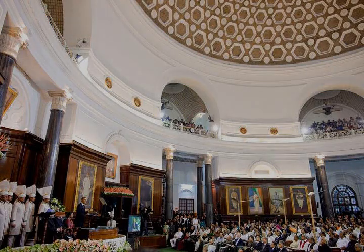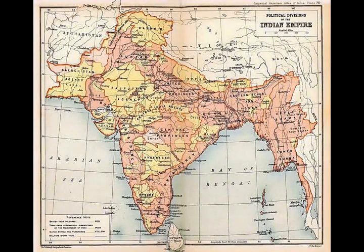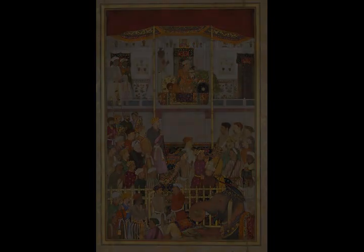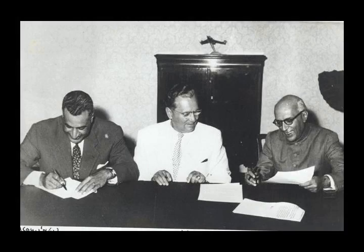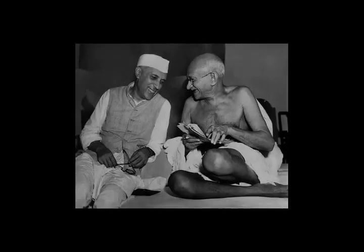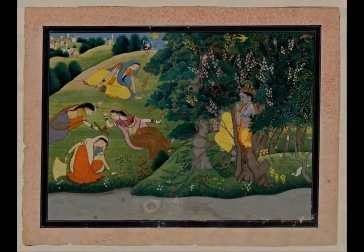India has been a member of the WTO since 1 January 1995. The 522 million worker Indian labor force is the world's second-largest as of 2017. The service sector makes up 55.6 percent of GDP, the industrial sector 26.3 percent, and the agricultural sector 18.1 percent. India's foreign exchange remittances of US$87 billion in 2021, highest in the world, were contributed to its economy by 32 million Indians working in foreign countries. Major agricultural products include rice, wheat, oilseed, cotton, jute, tea, sugarcane, and potatoes.